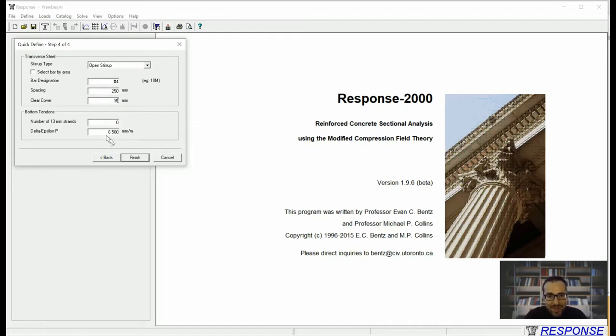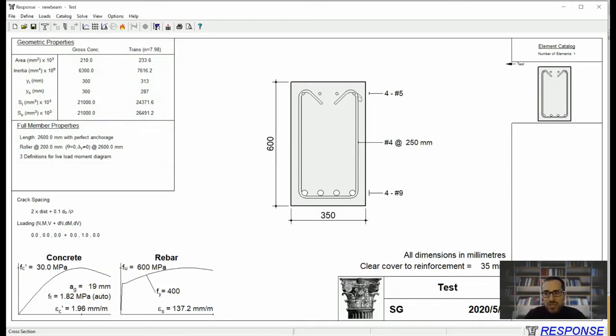I don't have any pre-stressing. I finished it. So you can see the entire input. You can also get calculated values for your gross concrete section properties as well as transformed section properties. If you are doing hand calculations, these are pretty useful. You can also get rebar and concrete stress-strain response automatically calculated by the program.